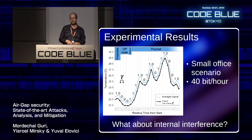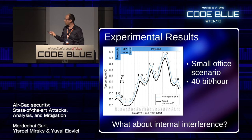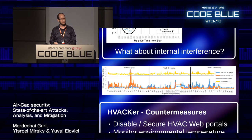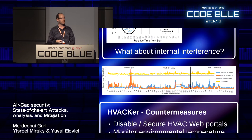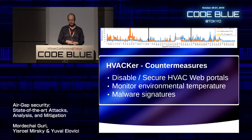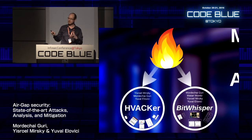In experimental results in a small office scenario, we got about 40 bits per hour — quite a lot when all you want to do is send a command. Internal interference from video playing, web browsing, and word processing was checked; the thermal sensor on a motherboard is not affected by these typical processes and picks up room temperature fluctuations well. Countermeasures: disable or secure HVAC web portals, monitor the temperature environment for suspicious fluctuations, and look for specific malware signatures.